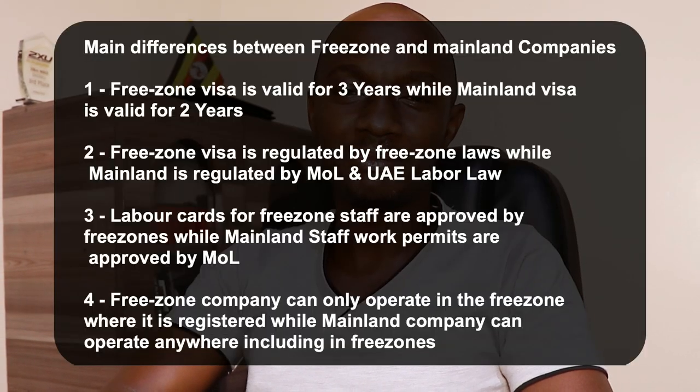Now let's look at the differences. Number one: the free zone company visa is valid for three years, while the mainland company visa is valid for only two years. A free zone company is regulated by the respective free zone laws, while the mainland company is regulated by the Ministry of Labor and the labor laws of the United Arab Emirates.